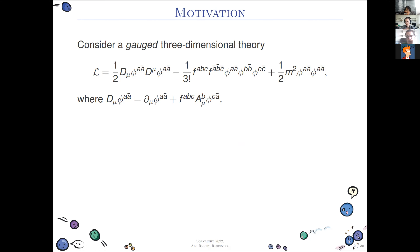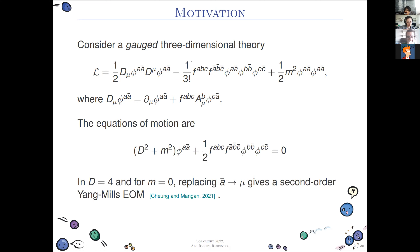We will consider a biadjoint scalar in two plus one dimensions — a massive biadjoint scalar in 2+1 dimensions. The only thing slightly strange about it is that it's gauged in one of the color sectors, so the unbarred color sector is gauged, and this gives this equation of motion.